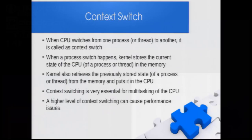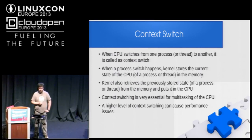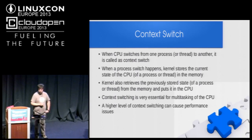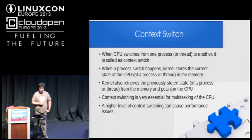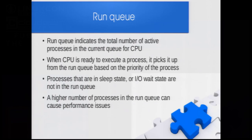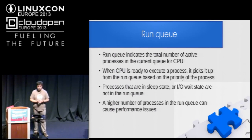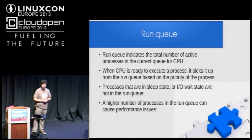What is context switch? When a CPU switches from one process or thread to another, this is called a context switch. When a process switch happens, the kernel stores the current state of the CPU in memory, and also retrieves the previously stored state of a process from memory and puts it in the CPU. Context switching is essential for multitasking on the CPU. A higher level of context switching can cause performance issues. The run queue indicates the total number of active processes in the current queue for the CPU.